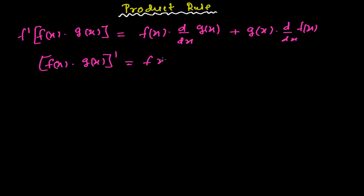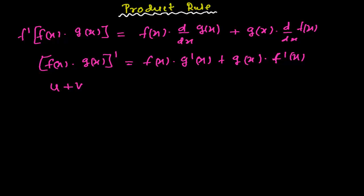So, f(x) times g'(x), meaning the first function times the derivative of the second function, plus the second function times the derivative of the first function, f'(x). Or in u and v form you can also write it like this: the product of two functions is u and v, where f(x) is considered as u and g(x) is considered as v.